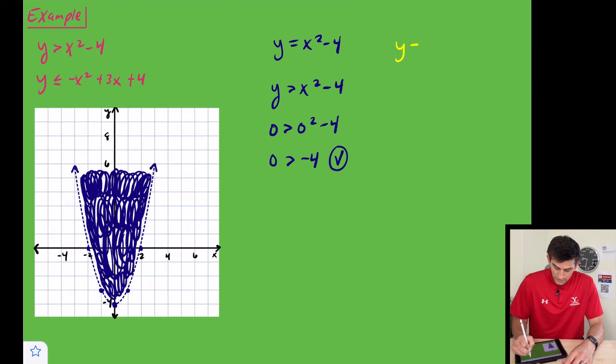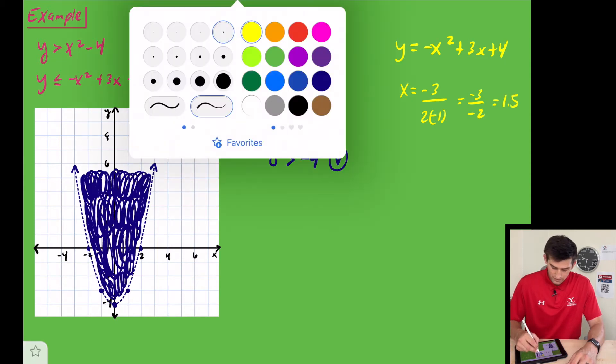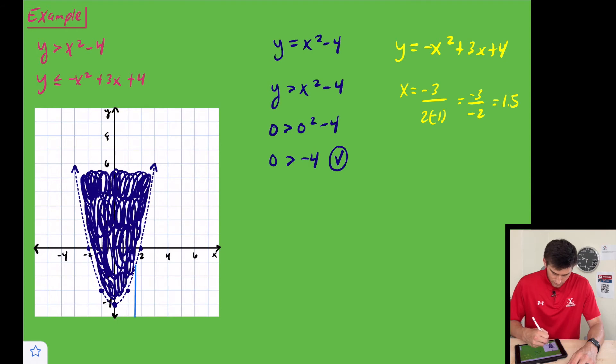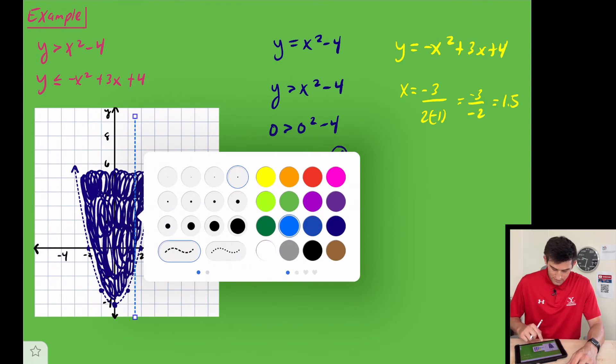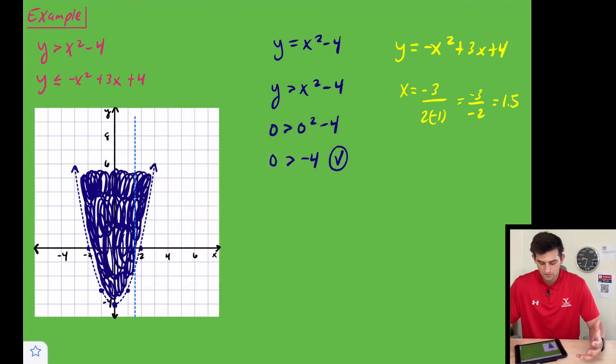We're going to graph y equals negative x squared plus 3x plus 4. Now we have this quadratic in standard form, so we should identify the axis of symmetry first. That's x is equal to opposite of b divided by 2a, so that's negative 3 over negative 2, which would just be 1.5. We'll add in our axis of symmetry at one and a half, which would be right here. We'll make that a dashed line and we'll take this away in just a minute—that's just where our axis of symmetry is located.